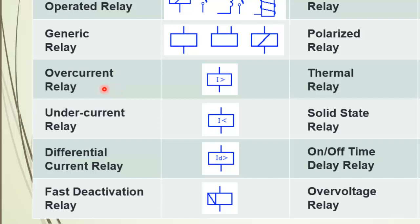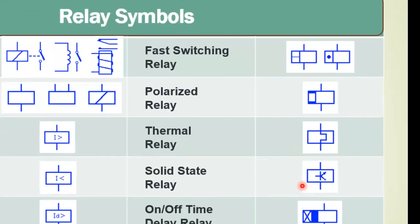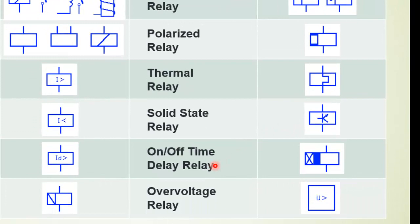The first is the overcurrent relay, where I is greater than a set value. Then the undercurrent relay, where I is less than. Then the differential current relay, represented by ID. Next are the fast deactivation relay and the fast switching relay. Then is the polarized relay, also called the directional relay. The thermal relay is the most common overcurrent relay. Then the solid state relay, the on delay and off delay timer relay, and the over voltage relay represented by U greater than.